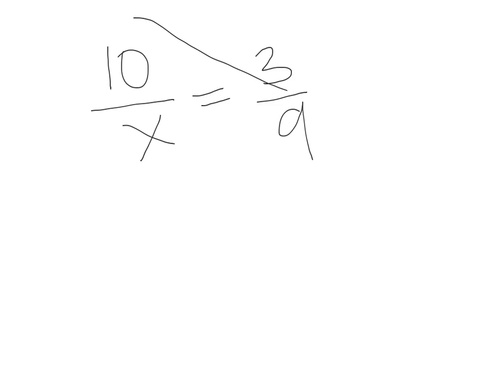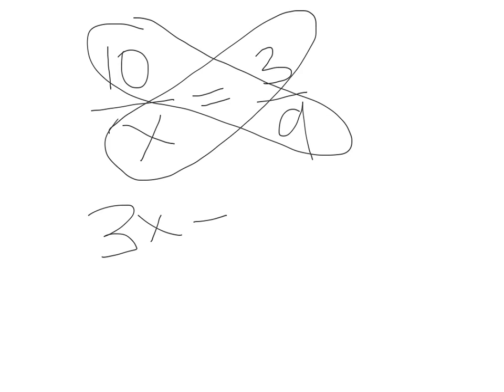Then you would just cross multiply the same way as if the variable was on the top. And it would be 3x equals 90.